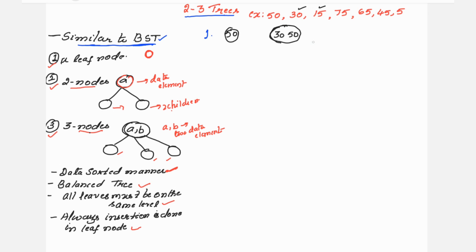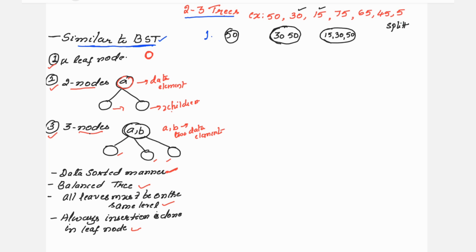Next is element 15. Since 15 is less than 30, in step three we would have 15, 30, and 50 in one node. But this node has three data elements, which is not allowed. You need to carry out splitting. When three elements — 15, 30, 50 — are present, the middle element 30 is promoted to the upper level, and 15 and 50 become the children.